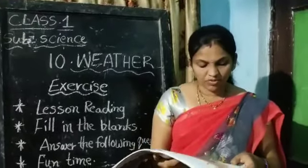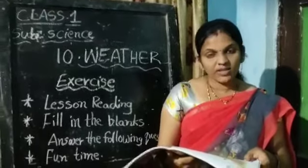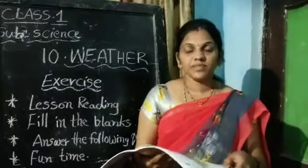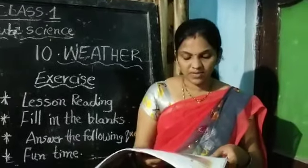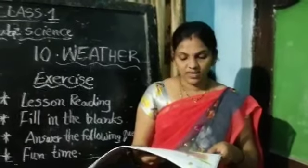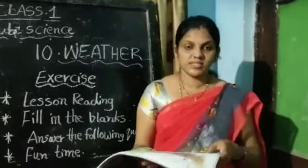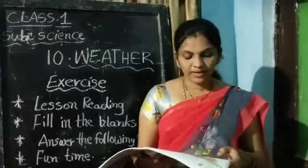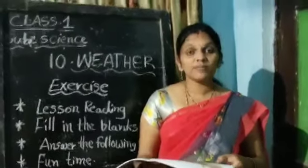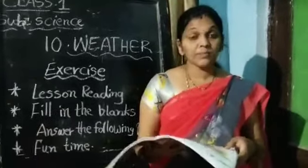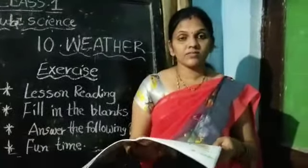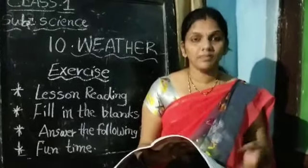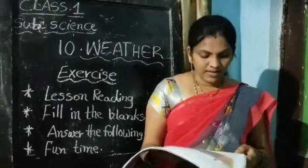Fourth question: what clothes do you wear in winter season? We wear woolen clothes in winter season. Fifth question: how do you protect yourself from rain? We protect ourselves from rain with an umbrella.